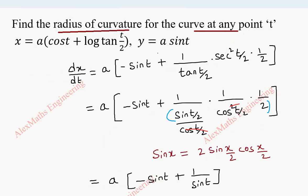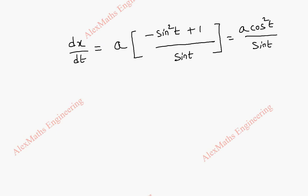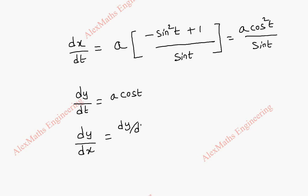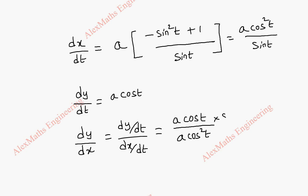Then we have y = a·sin t. From this we can find dy/dt, which is a·cos t. Now let us find dy/dx. This can be found by dividing dy/dt by dx/dt. So this is a·cos t divided by a·cos²t/sin t. The sin t comes to the numerator, a cancels with a, cos cancels with cos square, so sin t / cos t = tan t.